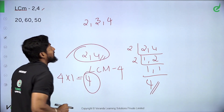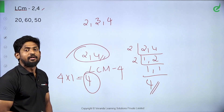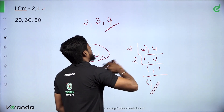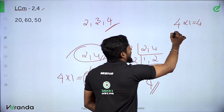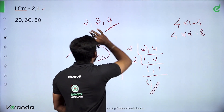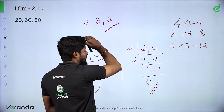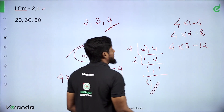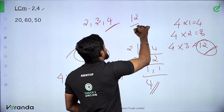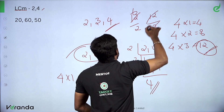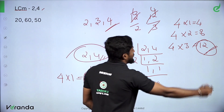Now find the LCM of 2, 3, and 4. The largest number is 4. Check multiples of 4: 4 into 1 is 4, 4 into 2 is 8, 4 into 3 is 12. Is 12 divisible by 2? Yes — 6 times. By 3? Yes — 4 times. By 4? Yes — 3 times. So LCM of 2, 3, and 4 is 12.